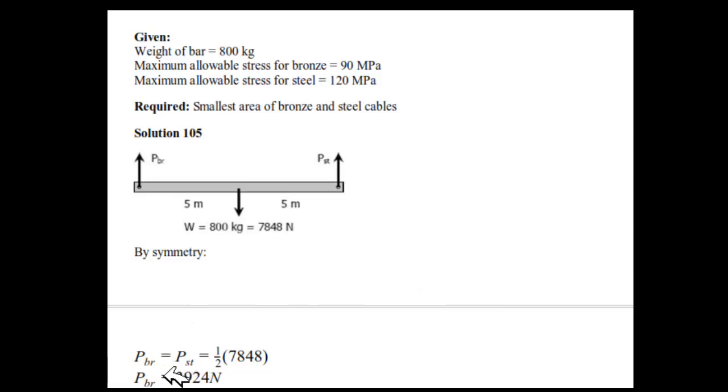Going downwards, we know that P bar equals P steel plus P bronze. This weight is supported by this bronze and the steel. Or we can also write that P bar equals half of the weight and P steel is also equal to half of the weight. So P bar equals P steel equals one-half of 7848.